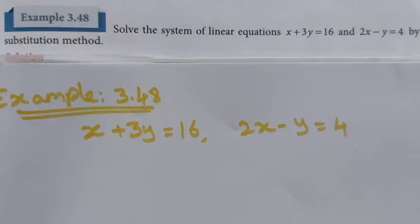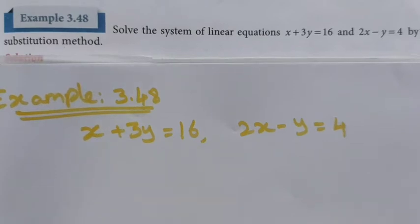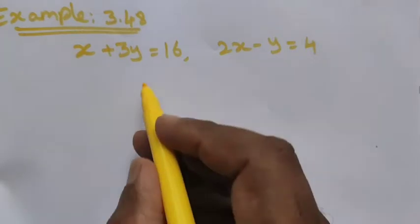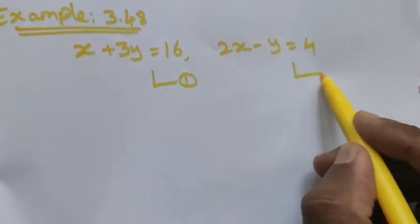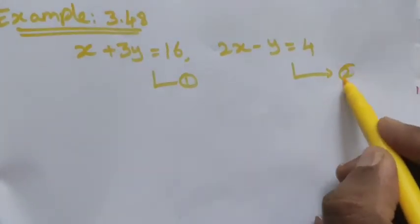Hi students, class 9 examples on solving the system of linear equations: x plus 3y is equal to 16, and 2x minus y is equal to 4, by substitution method. Let's see the two equations. In the substitution method, let me take the first as equation number one and the second as equation number two.